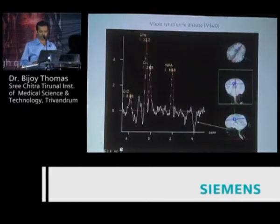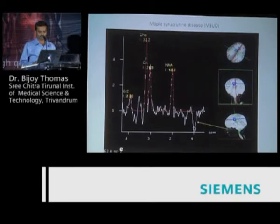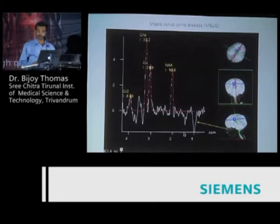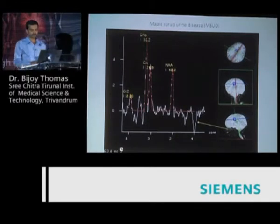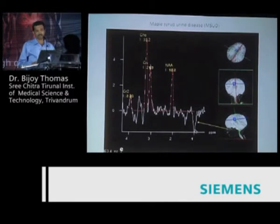You can also do spectroscopy in this case. This is a case given to me by Dr. Manoj from Trivandrum with similar findings. On spectroscopy you can see isoleucine, leucine, and valine at 0.9—an inverted peak. There are several peaks between 0.9 and 1.3; you should be very careful, as not all of these are fatty acids or lactate. In this clinical setting, NAA is low and lactate is present, but you can also see the isoleucine, leucine, and valine—the amino acids accumulating in maple syrup urine disease.